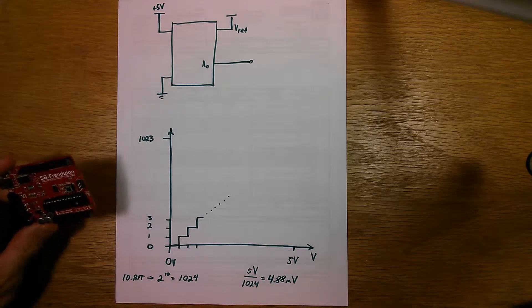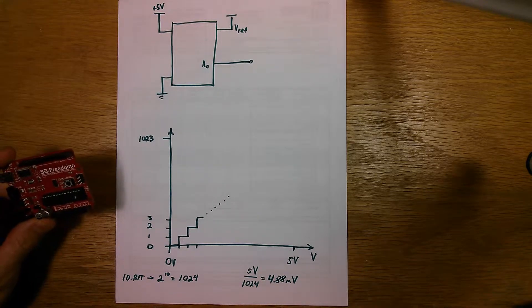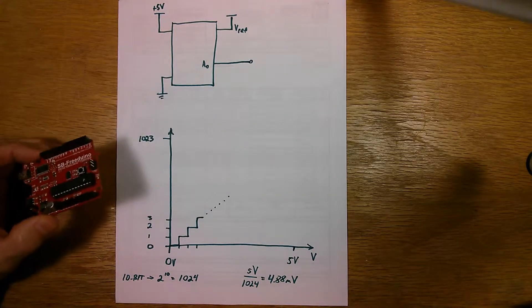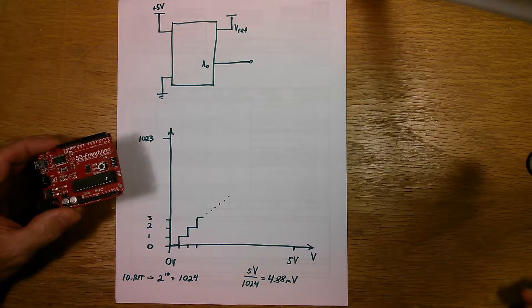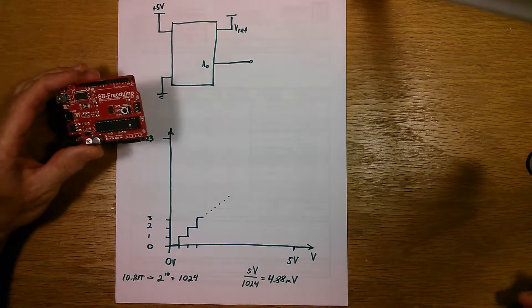Now I want to talk about the analog input pins. We're going to need one of them for the voltmeter to read the voltage so that the microcontroller can display it on the display.